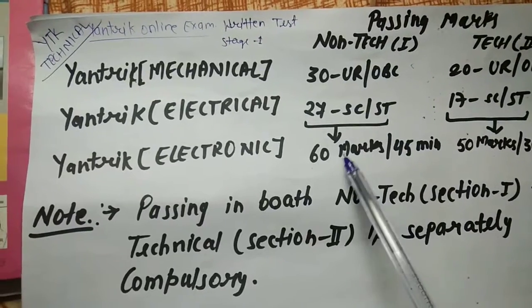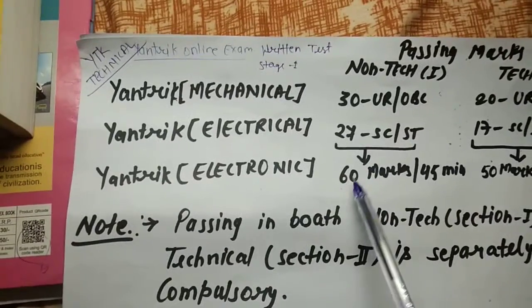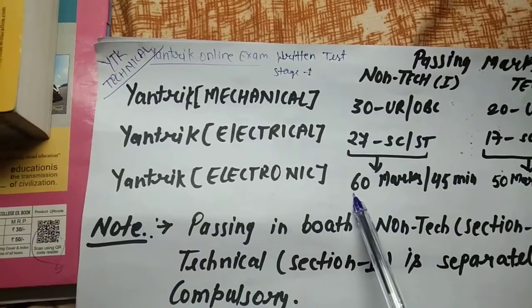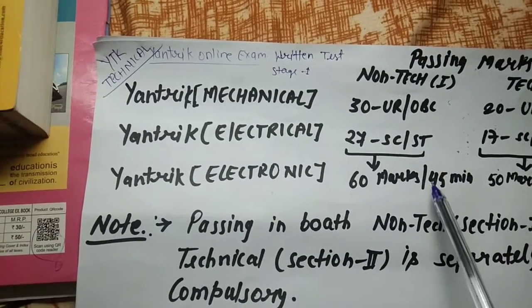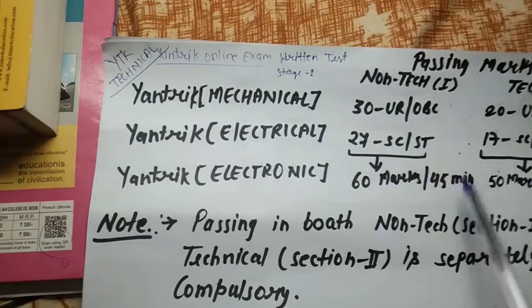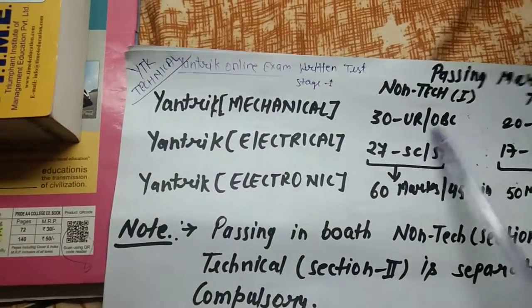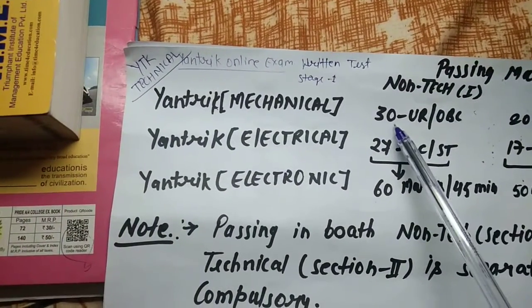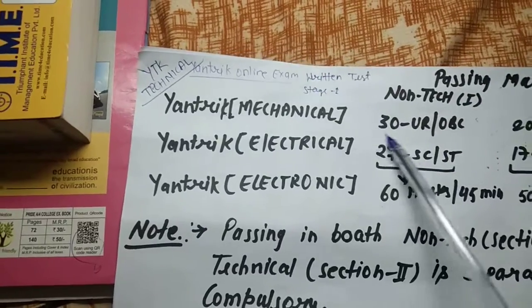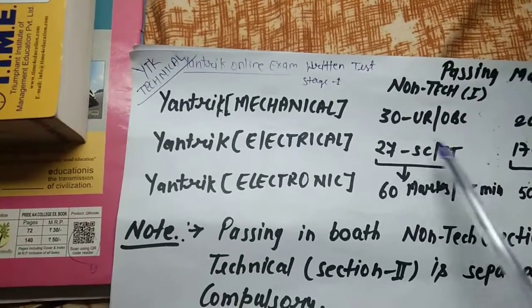Part 1: You will get 60 questions, each question is 1 mark, and you'll get 45 minutes. General and OBC candidates need 30 marks to qualify, and SC and ST candidates need 27 marks to qualify.